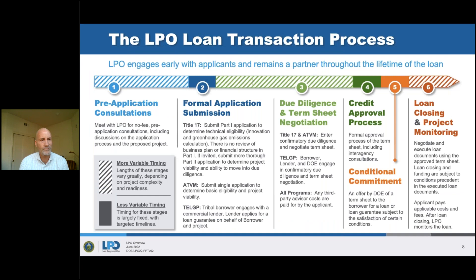The transaction process at LPO is similar to a traditional bank. There are pre-application consultations with our group — we coach the applicant for success, which can take from a few weeks to a few months. Then formal application submission, due diligence, drawing term sheets, and reaching a conditional credit letter — roughly eight to ten months total. The average loan right now is literally a billion dollars, though we have projects needing as little as $50 million. In my portfolio for transportation, the average applicant is asking for about $250 million.